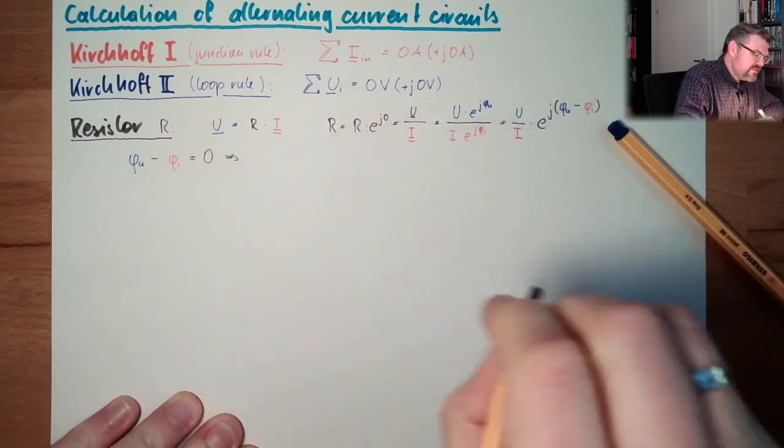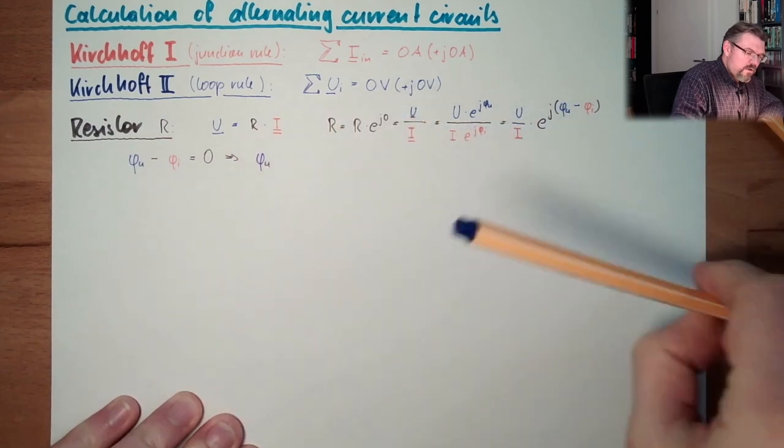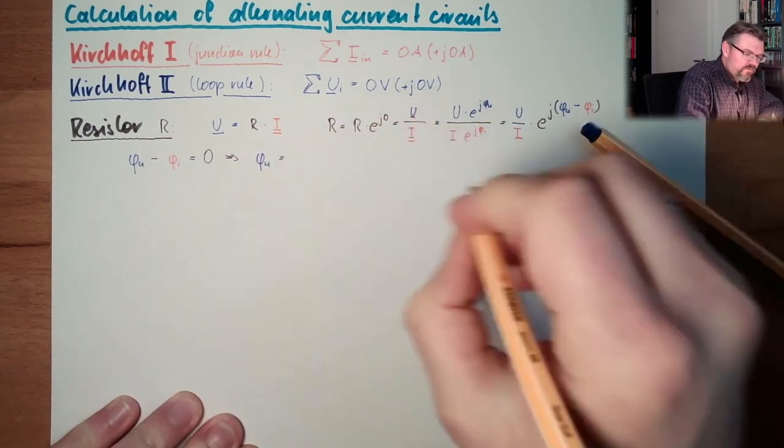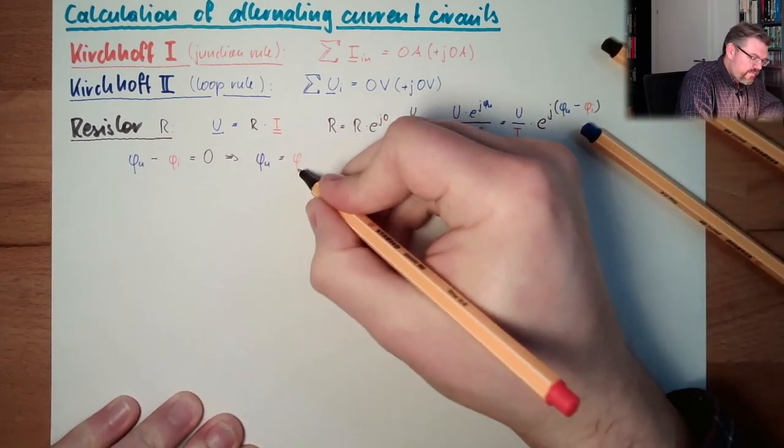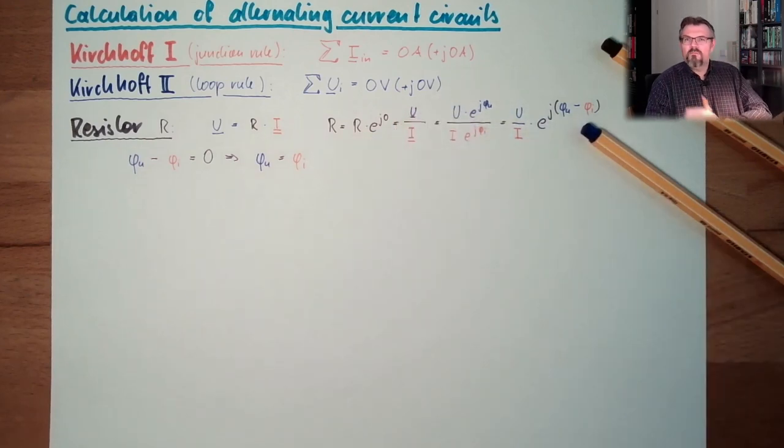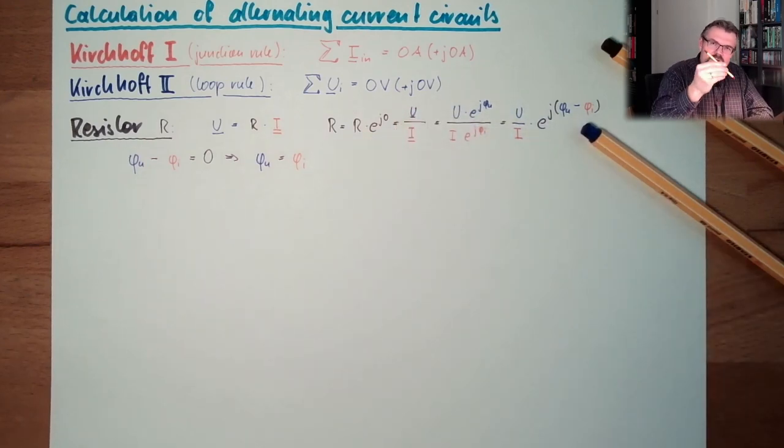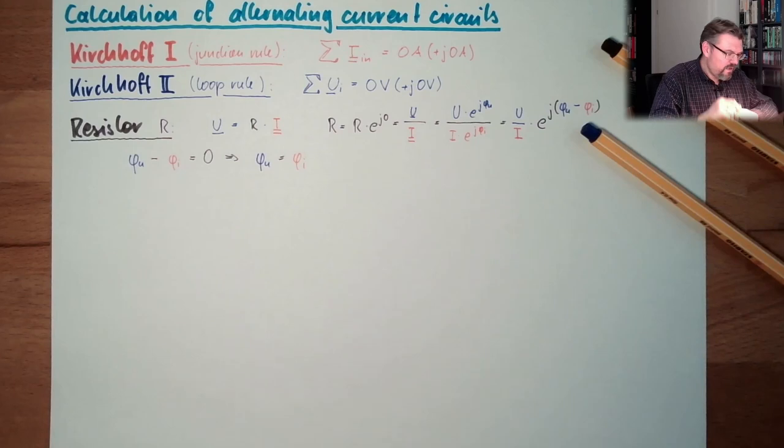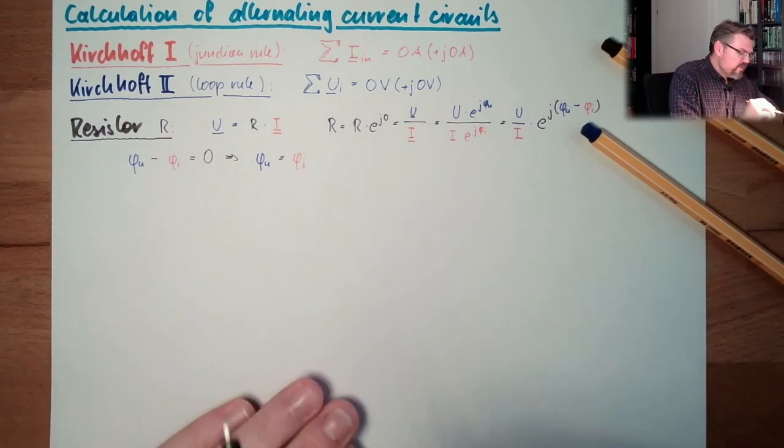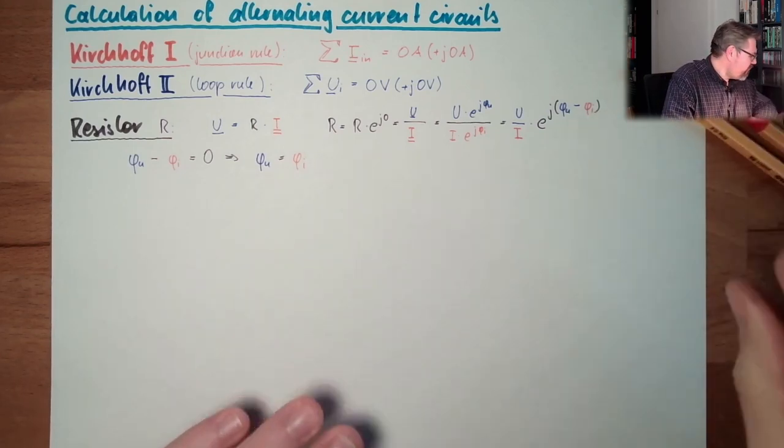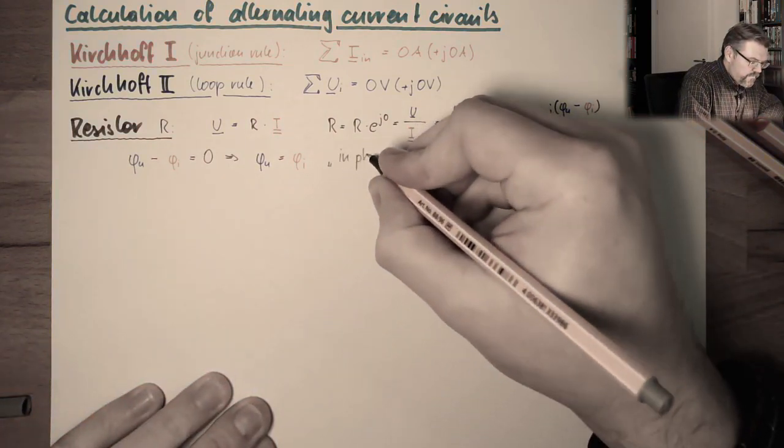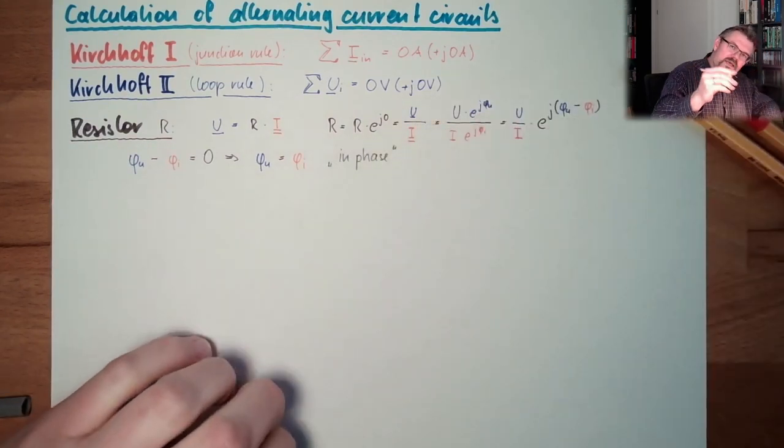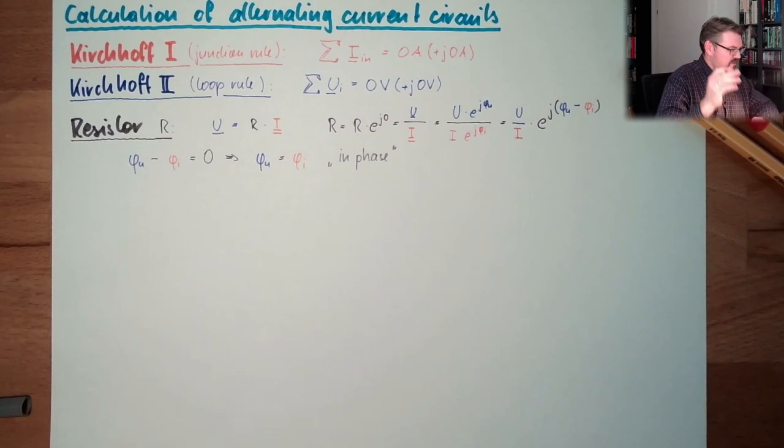What is written here is that phi U minus phi I must be zero. This means phi U must equal phi I. So both angles of both current and voltage are pointing in the same direction, have the same angle. So we call this in phase. They are swinging in the same phase.